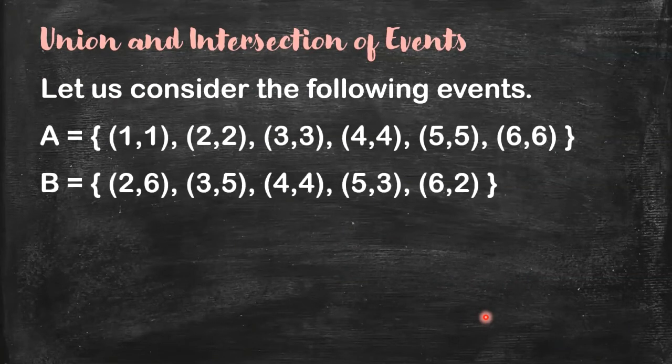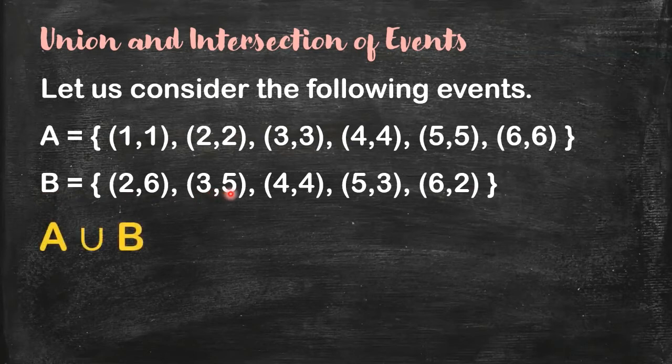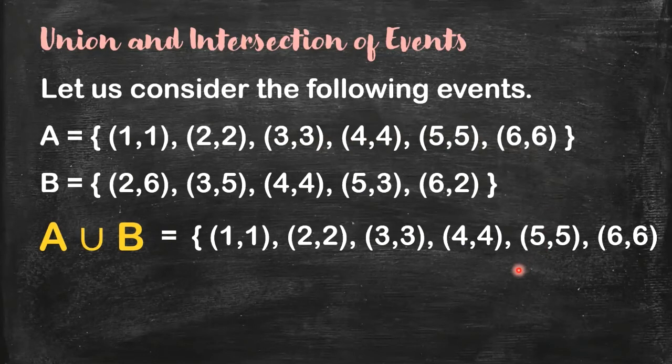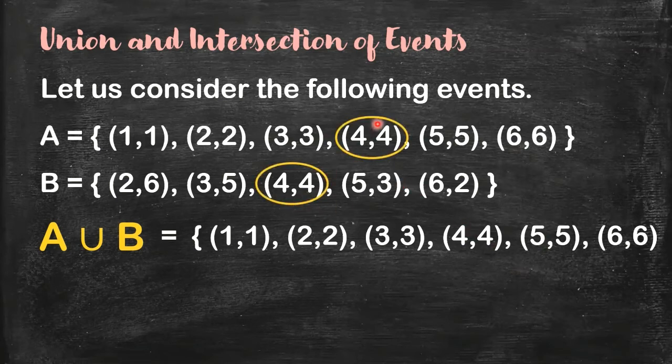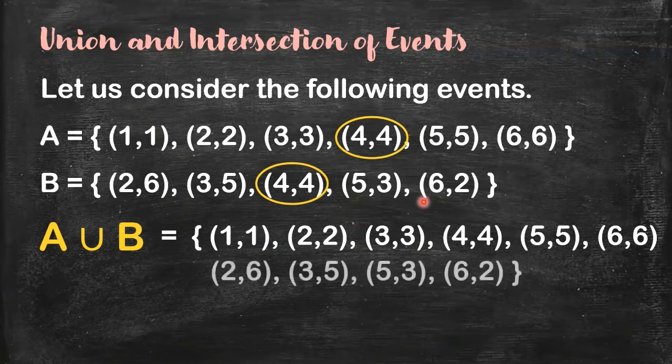Now let's get their union and intersection. We are just going to recall the two events. Event A is getting equal dots, and B is getting a sum of eight. Let's now take the union. How do you get the union again? You are going to list down all the elements in A and in B. So first, list down all the elements in set A. And then for B, but you have to be careful. Look at this: four, four. You already wrote four, four, because it's here. When you've already written it, you don't need to write it again. So you don't repeat elements. That's why I will just add to the union: two, six; three, five; five, three; six, two.